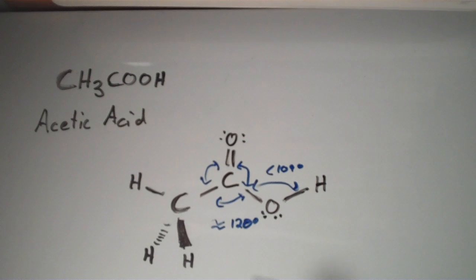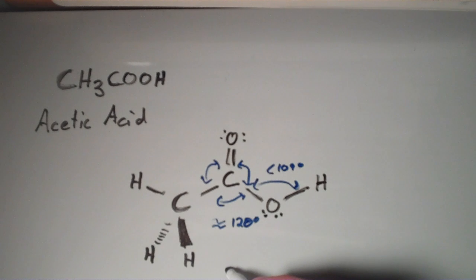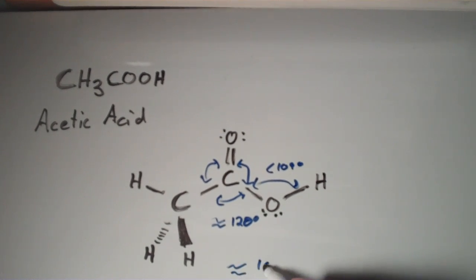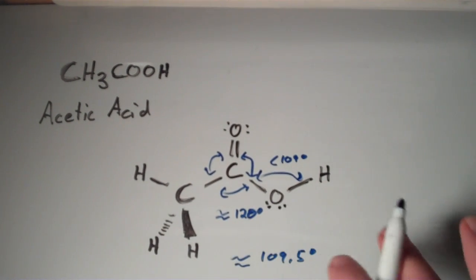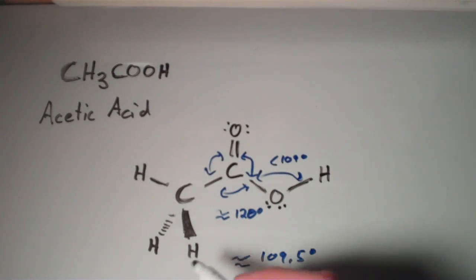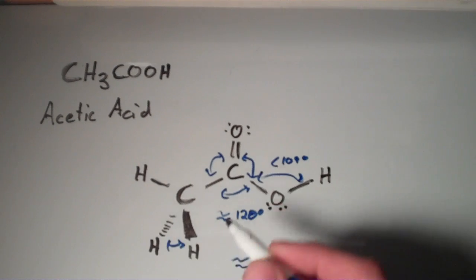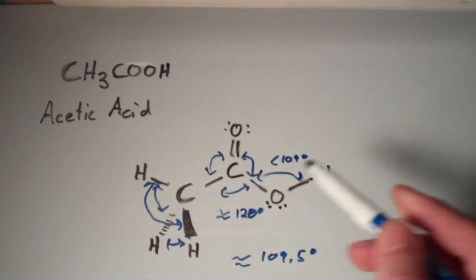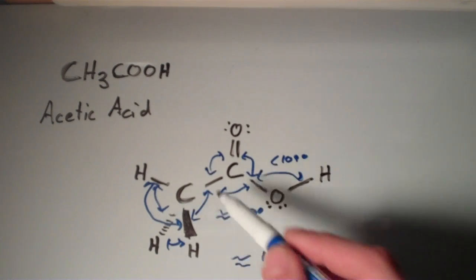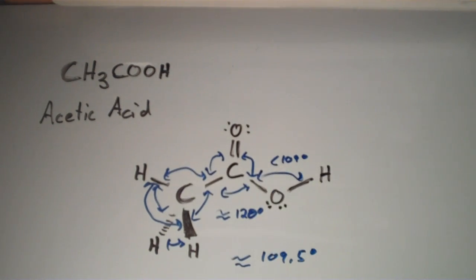And then what's remaining is all these other angles, which are approximately 109.5 degrees. And again, because this thing is not symmetrical, those values could be above or below 109.5. So, I'm talking about this angle, this angle, this angle, that angle, and that angle. That whole mess. Those are all about 109.5.